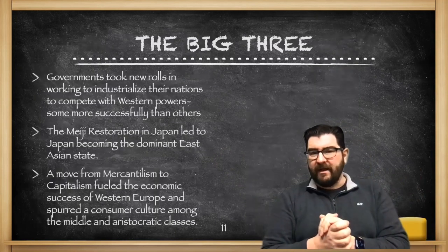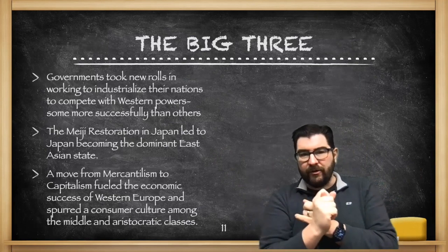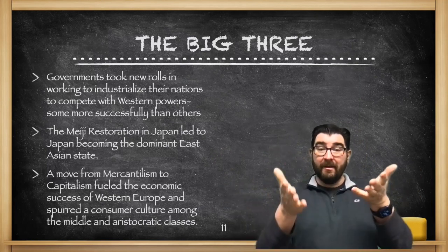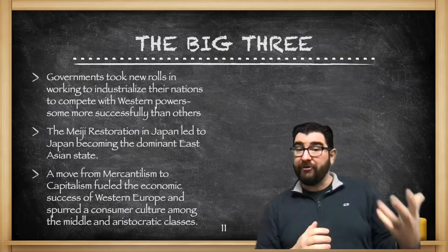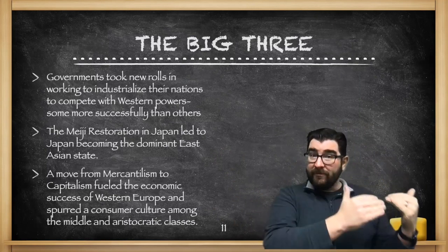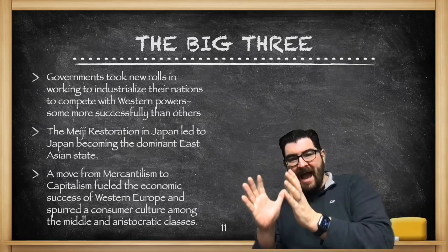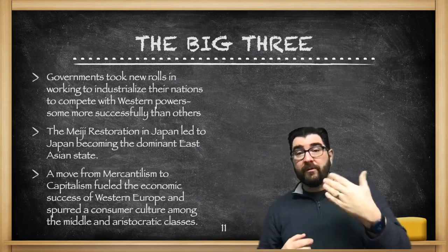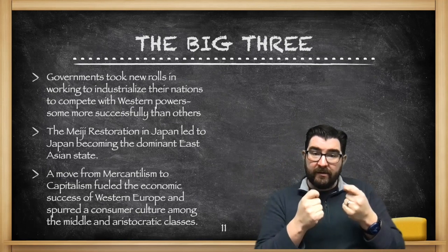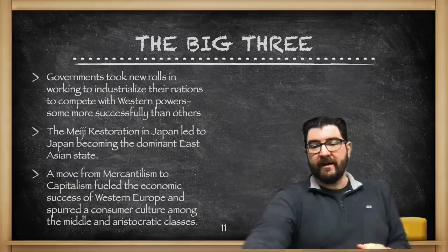The big three takeaways from this session: Governments are going to take new roles in working to industrialize their nations to compete with Western powers, to varying degrees of success — the most successful in East Asia being Japan following the Meiji Restoration. And we see a move from the mercantilist economic system of 1450 to 1750 to a capitalist economy that fuels the economic success of Western European states and spurs a consumer culture among middle and upper classes. We'll talk to you next time.